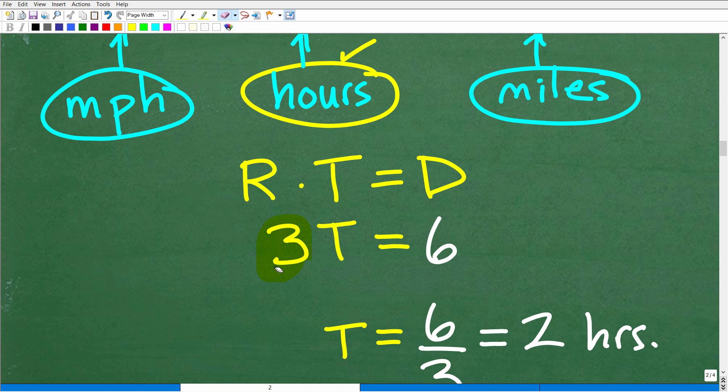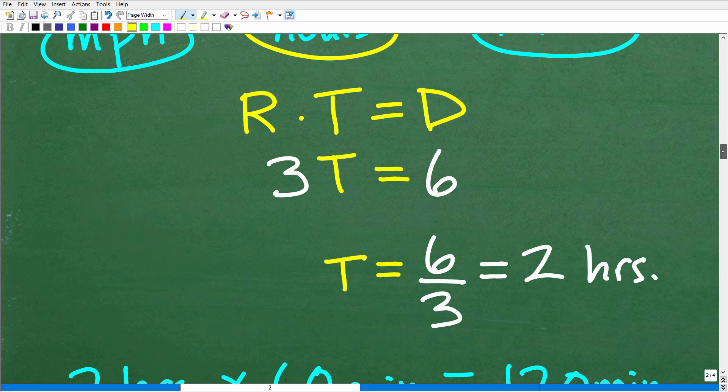Her rate is 3, we're solving for T which is time, equals 6 which is distance. Rate times time equals distance, so 3T = 6. To solve for T, divide both sides by 3, and we get time equals 6 divided by 3, which is 2.